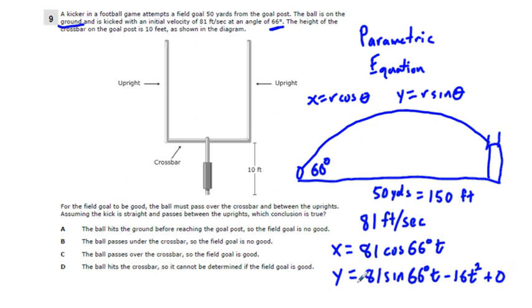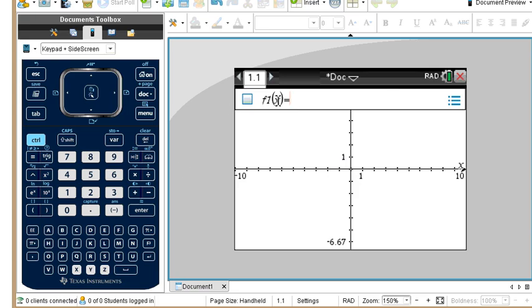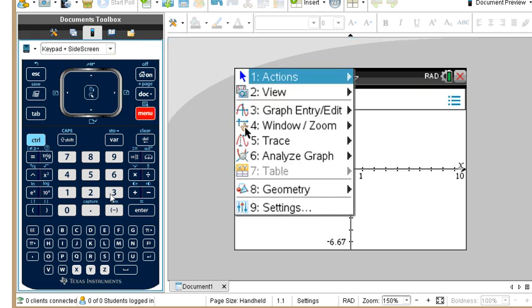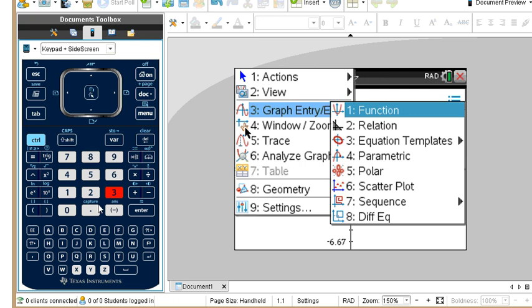Now we can just enter these in the calculator, and that's kind of key how to do that. We first get a graph page, and this is a TI Inspire CX calculator, and then we go to menu 3 and 4, which is parametric.